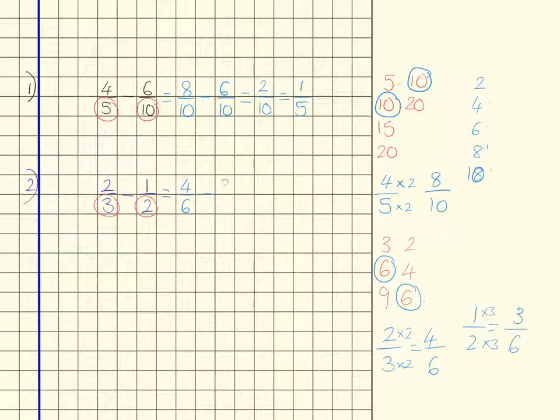So 4 over 6 subtract 3 over 6, 4 subtract 3 is 1, so therefore it's 1 over 6.